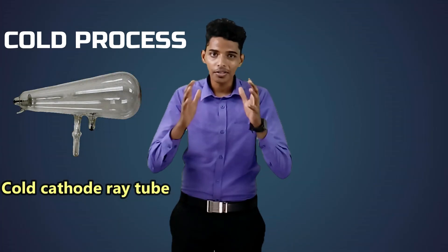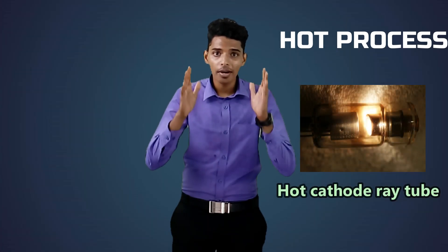To produce X-rays we need high-velocity electrons. These high-velocity electrons can be created by two processes. Number one is by ionizing the partially filled air inside the tube — this is called the cold process and is done in a cold cathode ray tube. Number two is by heating a heavy metal under high kV supply — this is called the hot process and is done in a hot cathode ray tube. In this lecture we are going to see the principles of X-ray production in the cold cathode ray tube.